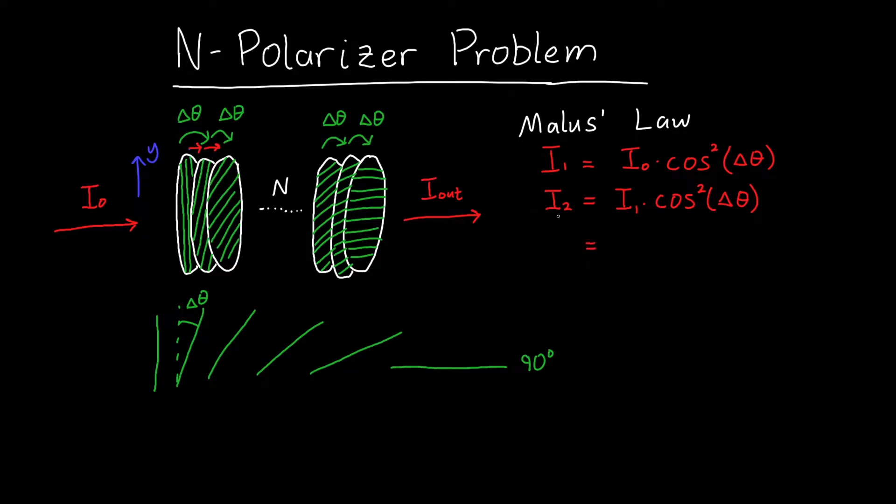We can also replace I₁ with I₀ times cosine squared of Δθ, in which case we'll have I₀ times cosine to the fourth of Δθ for our second intensity. If we keep playing this game, we'll eventually get that Iₙ, the intensity after the nth polarizer, is I₀ times cosine to the 2n of Δθ.